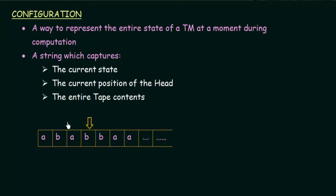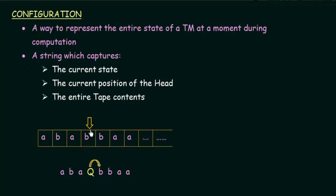The configuration of a Turing Machine can be represented as follows. For example, the string ABAQBBAA represents the tape contents ABABBAA, with Q representing the current state. The tape head points at symbol B, so we are in state Q looking at symbol B on the tape. This string can tell us the exact status of our Turing Machine at any particular moment.